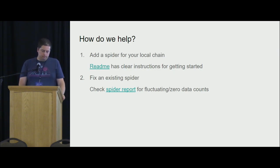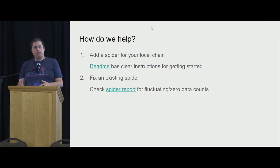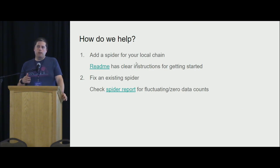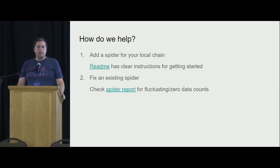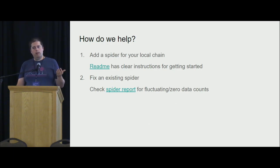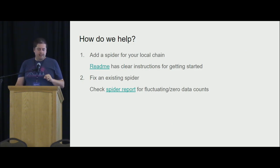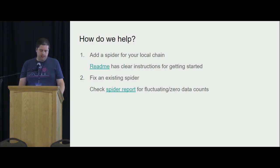If you don't have a particular spider or place in mind, you can look at the existing report to see which ones are failing. It's usually pretty obvious — some HTML changed a little bit and you can go and fix that. That's a super easy way to contribute. We participate in the GitHub Hacktoberfest thing — they used to give out t-shirts, but now they plant trees. So this is a great way of winning that. Keep that in mind this October.